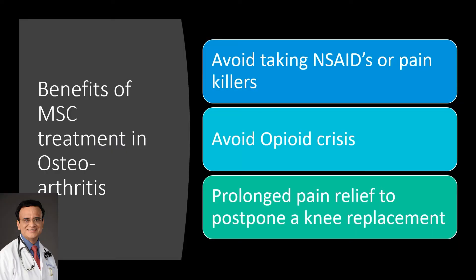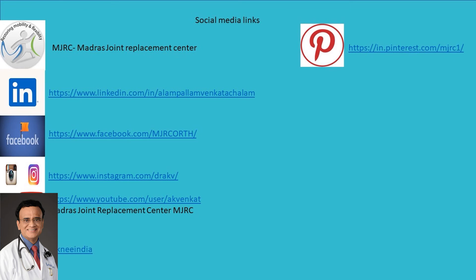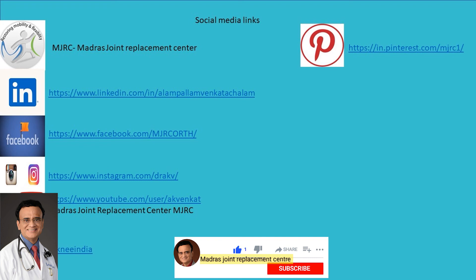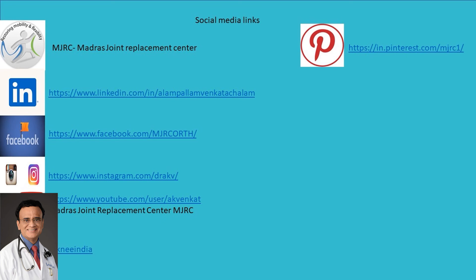What is the benefit of MSC treatment in osteoarthritis, commonly for the knee joint? Some patients have been able to get prolonged pain relief and have postponed knee replacement. The longest follow-up for stem cells is up to 6 years and continuing — these patients have avoided knee replacement. In the short term they can avoid taking NSAIDs and painkillers, or they can avoid opioids. If you haven't subscribed already, consider subscribing to my YouTube channel, Madras Joint Replacement Center. Share with your friends and relatives if they need a stem cell procedure.